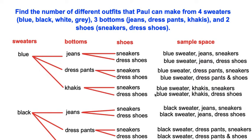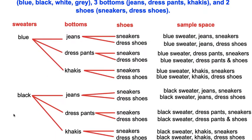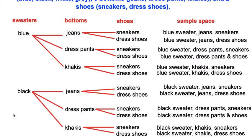Please excuse the barking in the background — those are my dogs. Now if he changes his sweater choice to black, let's see how many choices he can create with his outfits just by choosing the black sweater. In the sample space, he has six choices.